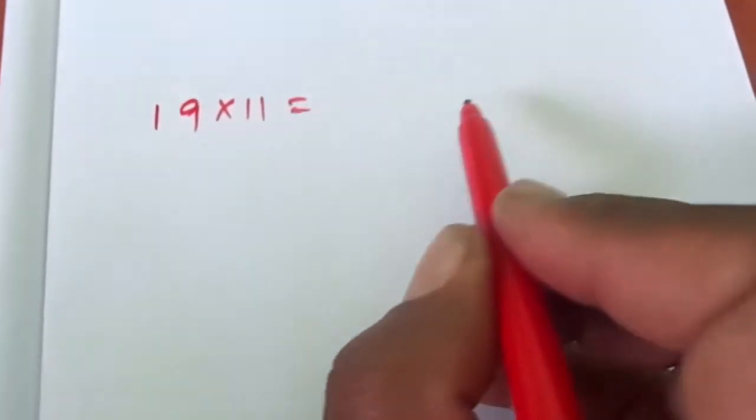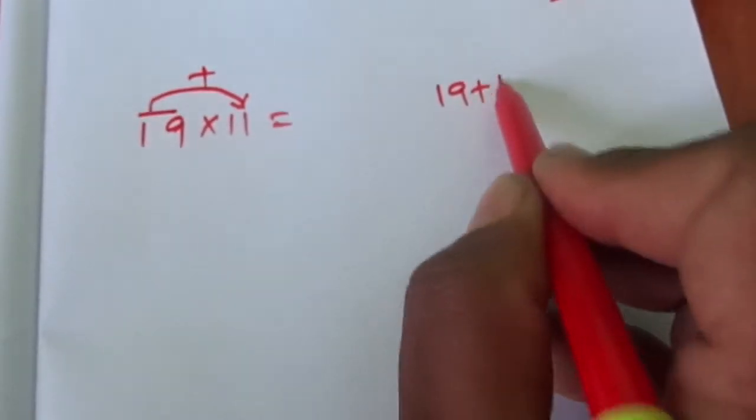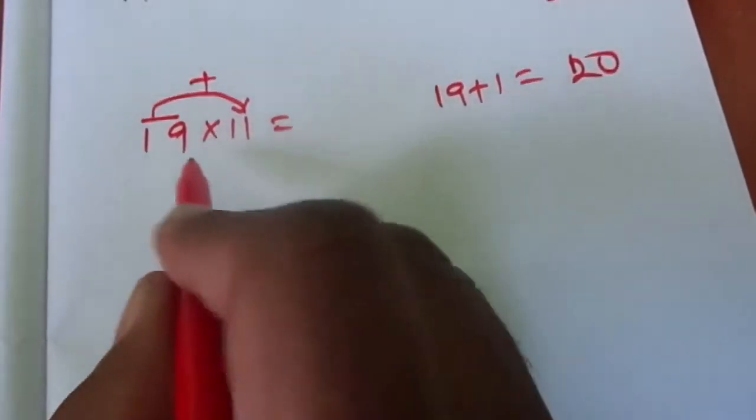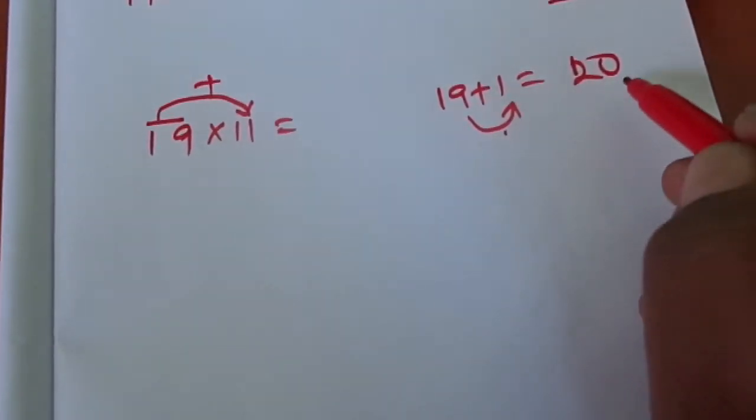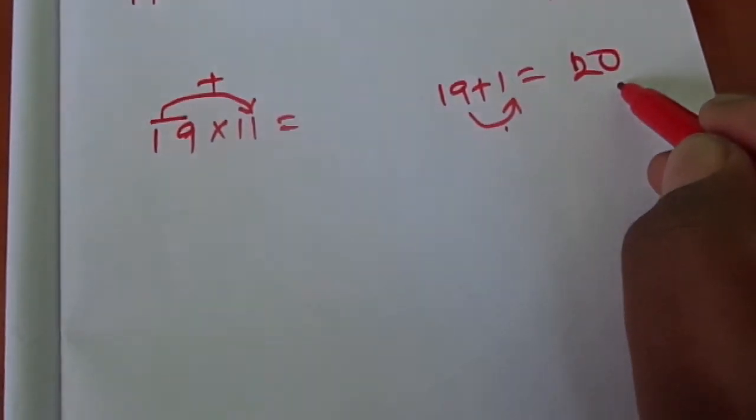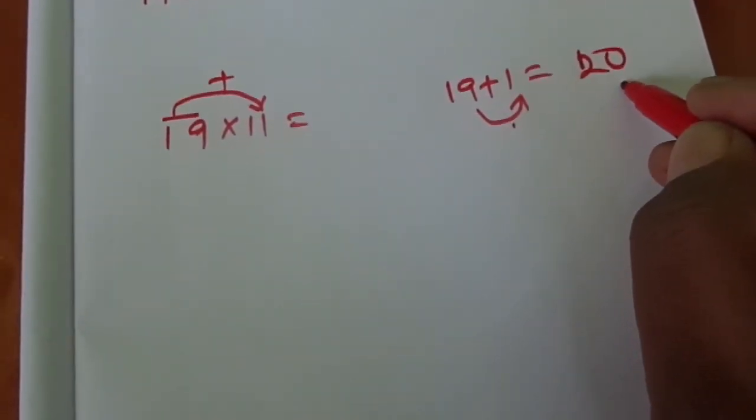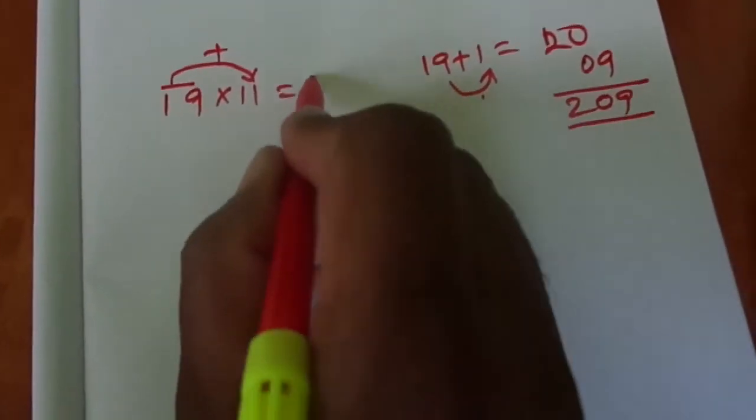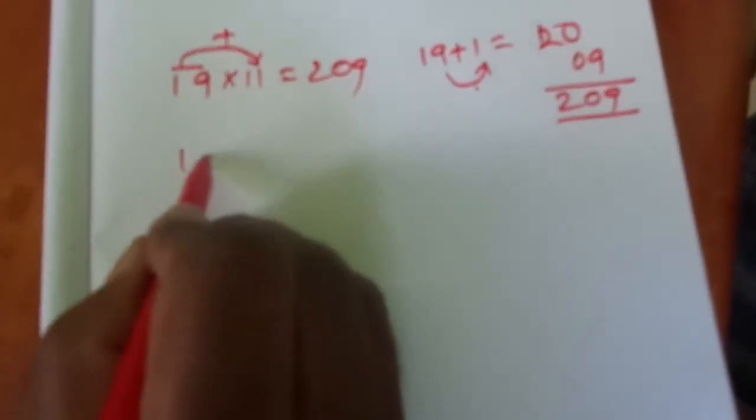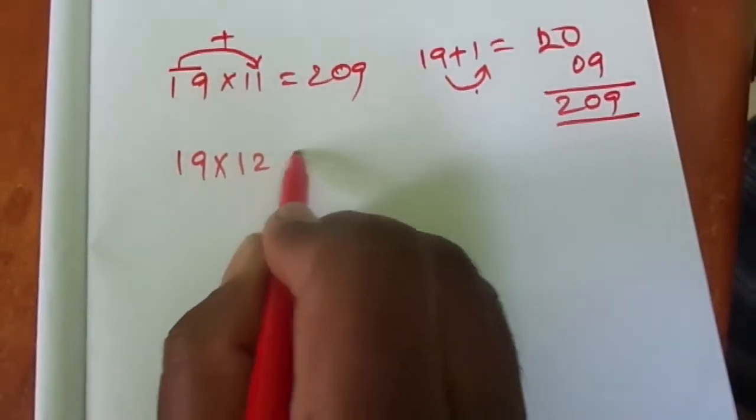For 19 × 11, first add these two numbers: 19 plus 1 (the ones place of 11), your answer is 20. Now multiply the ones place of both 19 and 11, so 9 × 1 is 9. Now add those two digits together and write the answer. You got the answer 209.